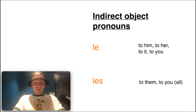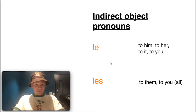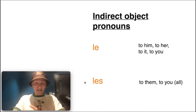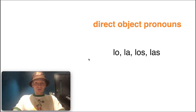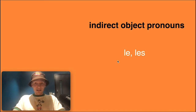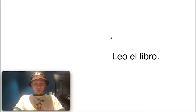For the indirect object pronouns, there's no distinction between masculine and feminine, which is nice. It's just le for 'to him,' 'to her,' 'to it,' or 'to you,' and les for 'to them' or 'to you all.' No masculine or feminine distinction here. So to recap: direct object pronouns are lo, la, los, and las; indirect object pronouns are just le and les.